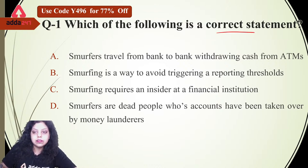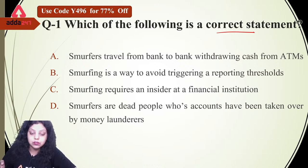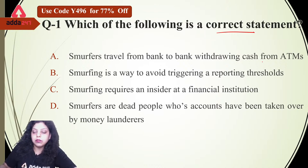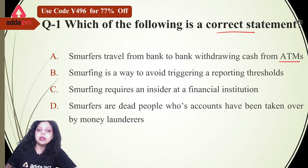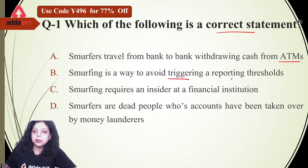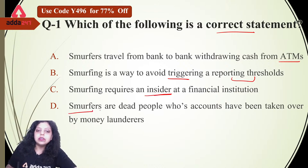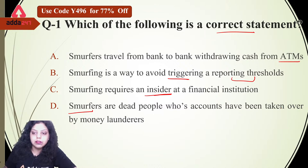Which of the following is a correct statement? First option: smurfs travel from bank to bank withdrawing cash from ATMs. Second: smurfing is a way to avoid triggering or reporting thresholds. Third: smurfing requires an insider at a financial institution. Fourth: smurfs are dead people whose accounts have been taken over by money launderers. Which of the following statements is correct regarding smurfers?